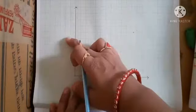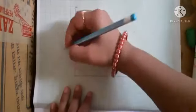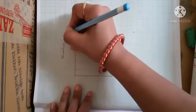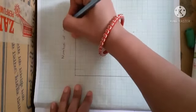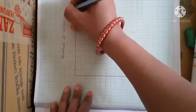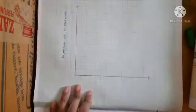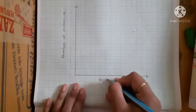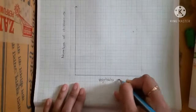Now this side we will be writing the number of children. So we will mention here: Number of Children. Here is the number of children written. This side it is Vegetables. Done.